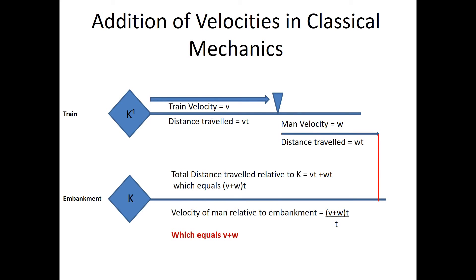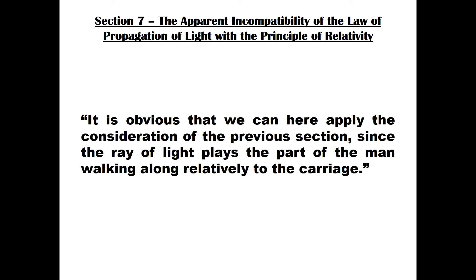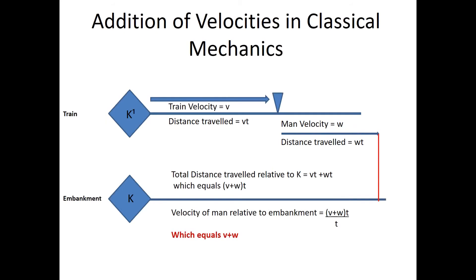This is how we left the embankment, but for this next thought experiment we will make one change: the man will sit still in the train, and instead of moving himself, he will turn on a source of light — say a torch or a flashlight. In this case, a ray of light travels in the train instead of the man. It is obvious that we can apply the consideration of the previous section, since the ray of light plays the part of the man walking along relatively to the carriage. So instead of the man walking with velocity W, we now have the velocity of light C replacing W in all calculations.